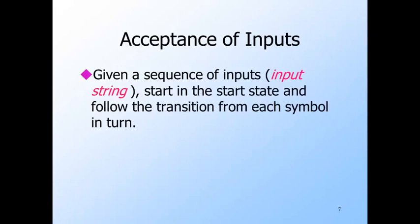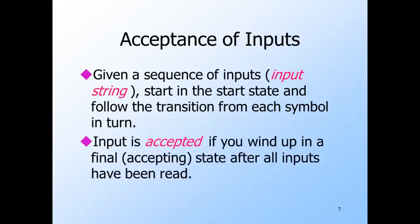The job of an automaton is to process strings of input symbols, or input strings. We always begin at the start state, and we read each input symbol in order. For each input symbol, we follow the transition from the state we are in to discover what the new state is. We accept the string if we wind up in a final state after processing the entire input. Here is an example.